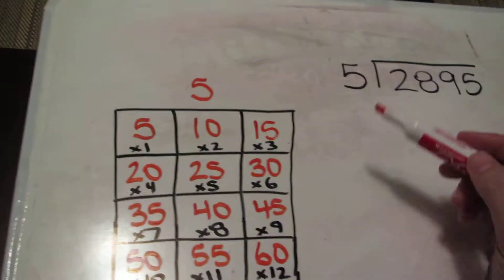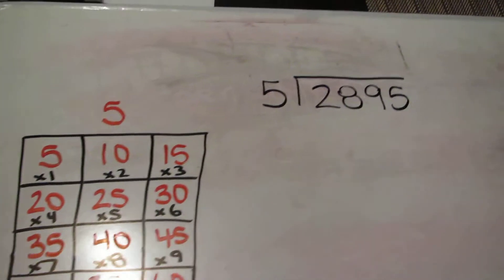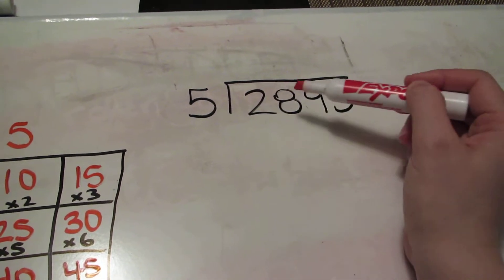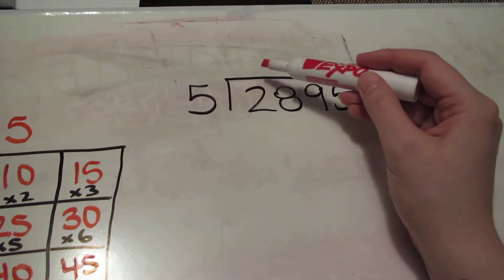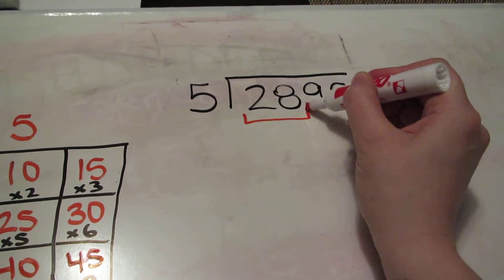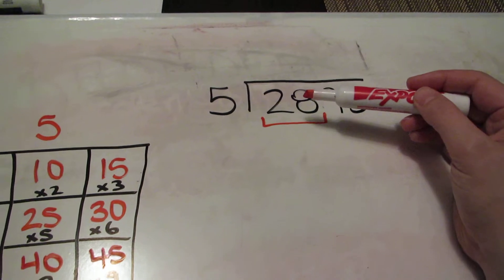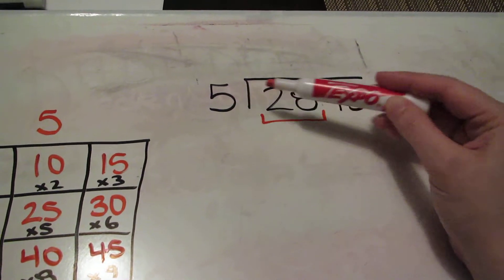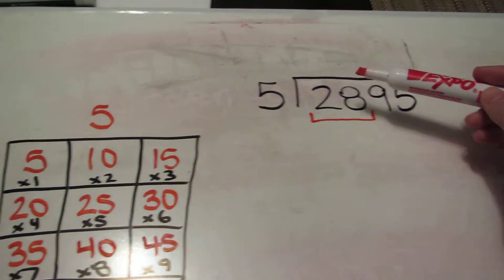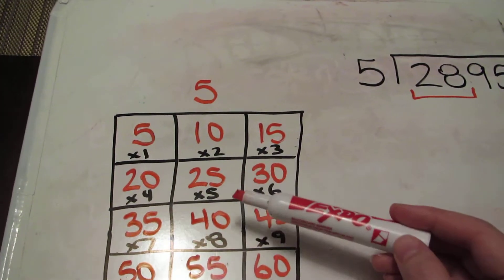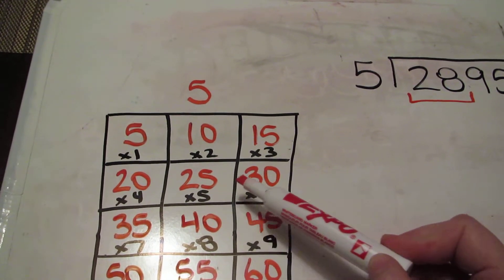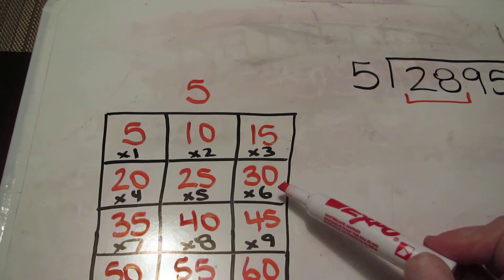I'm going to use this to help me find my answer. First I'm going to ask myself how many times does 5 go into 2. Well, it actually doesn't go in any times, so I'm going to right away look at the second number. Then I'm going to ask myself how many times is 5 going to go into 28 without going over. If I don't know my times tables off by heart, I'm going to come back over here and check.